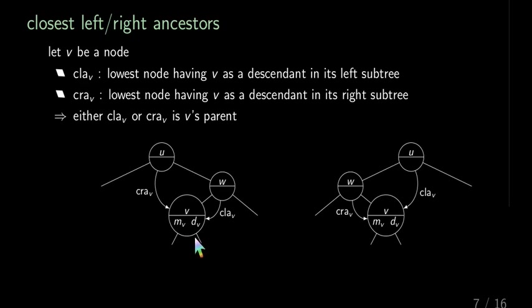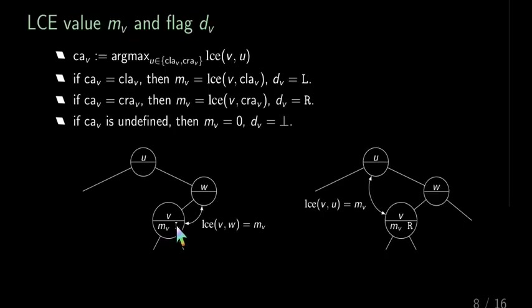Now we can define what this MV and DV are. For that, we need additionally a node definition, which is CA. And CA is either clay or cray, depending on which has the longer LCE with V. This longer LCE is then stored in MV, which is the left bottom part. And if CA is clay, then the flag becomes L. Otherwise, the flag becomes R.